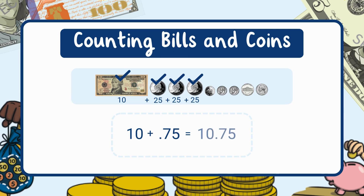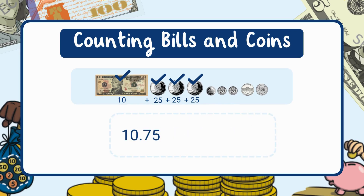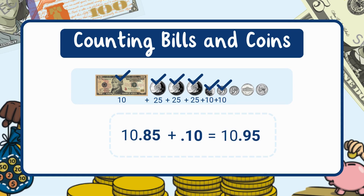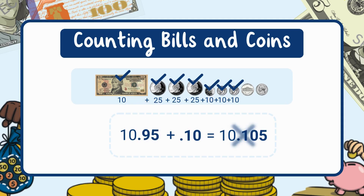Ten dollars plus 75 cents equals ten dollars and 75 cents. Next, let's add three dimes. A dime is worth 10 cents: 75 plus 10 equals 85 cents, plus 10 equals 95 cents, plus 10 equals 105 cents. When we reach 100 cents, that's the same as one dollar — so instead of writing 105 cents, we move the one dollar to the dollar side. One dollar plus ten dollars makes eleven dollars, leaving five cents.